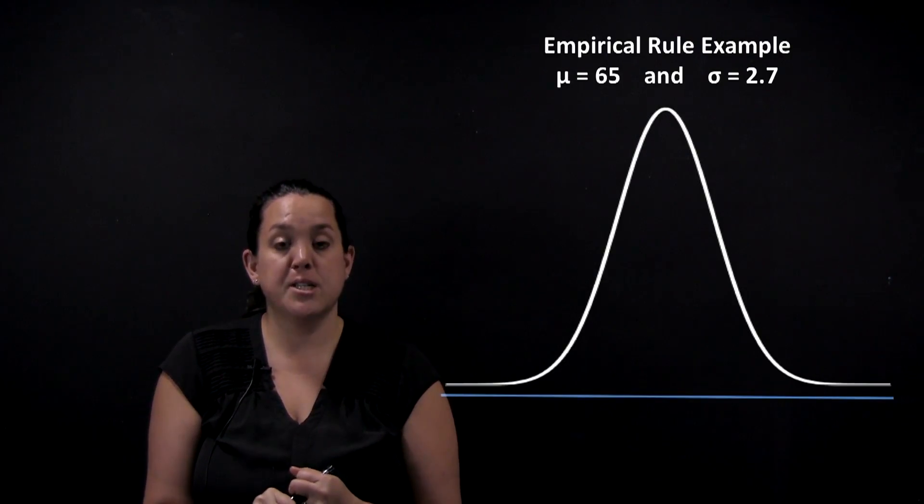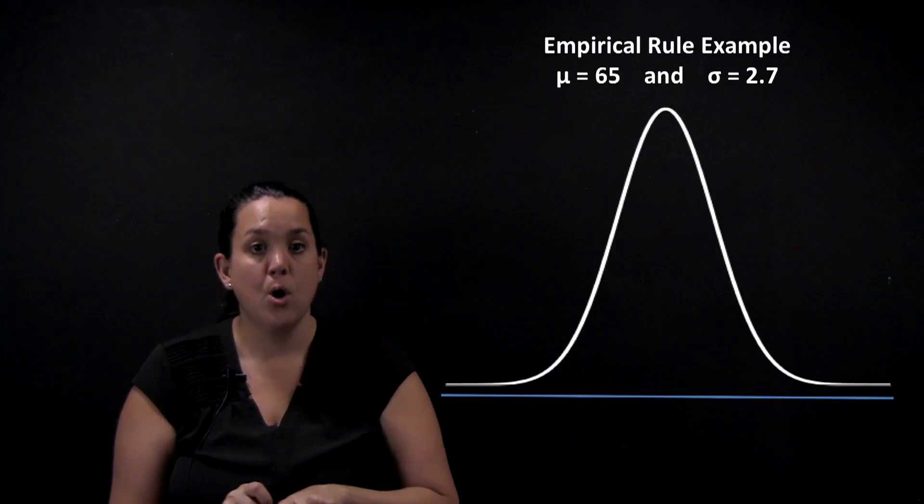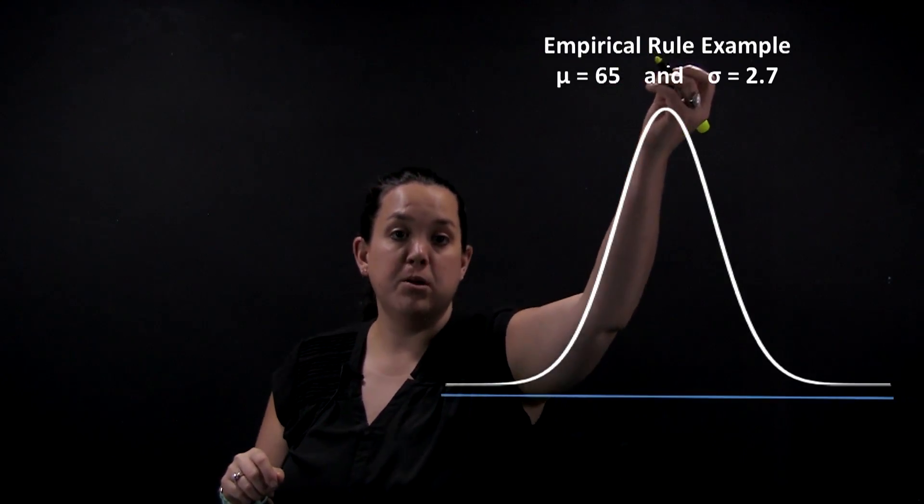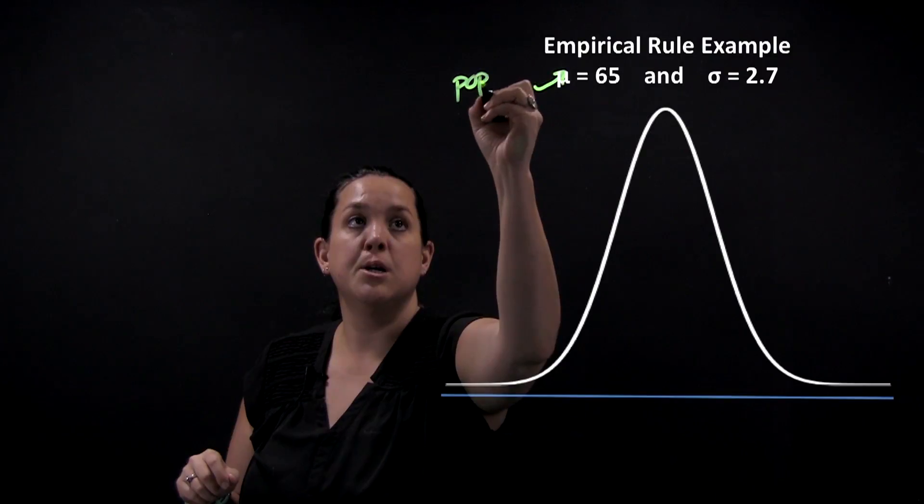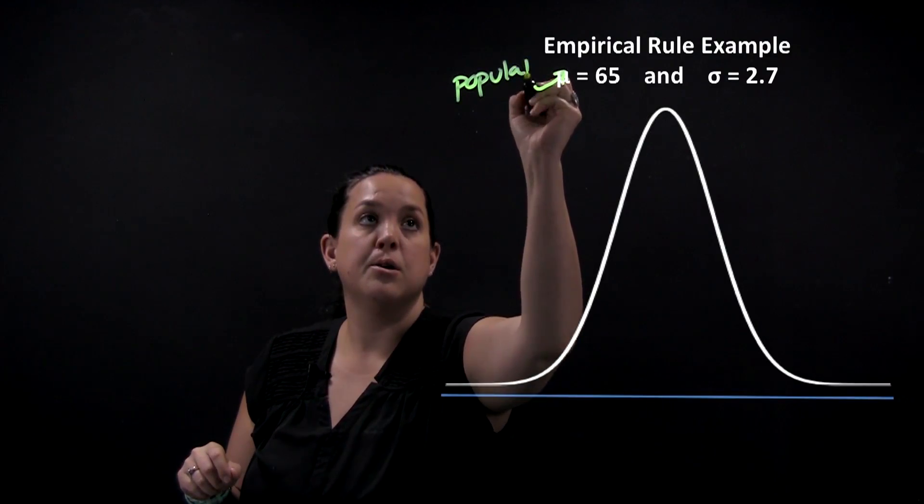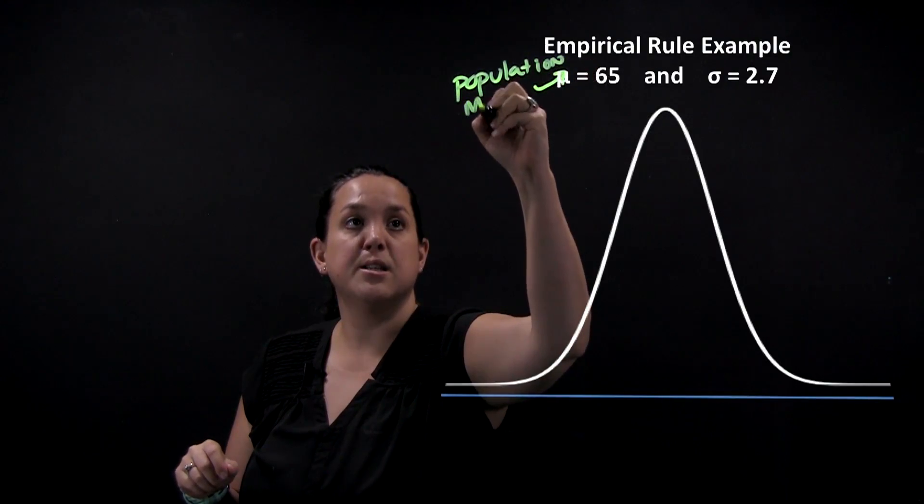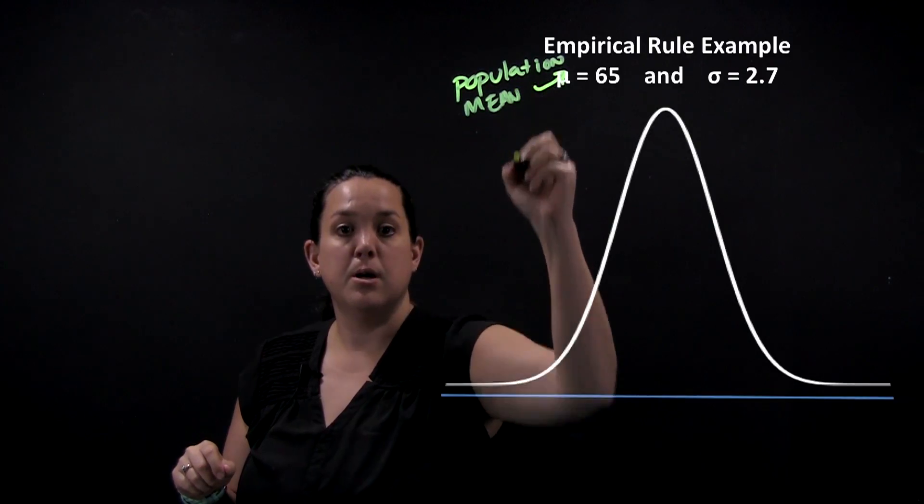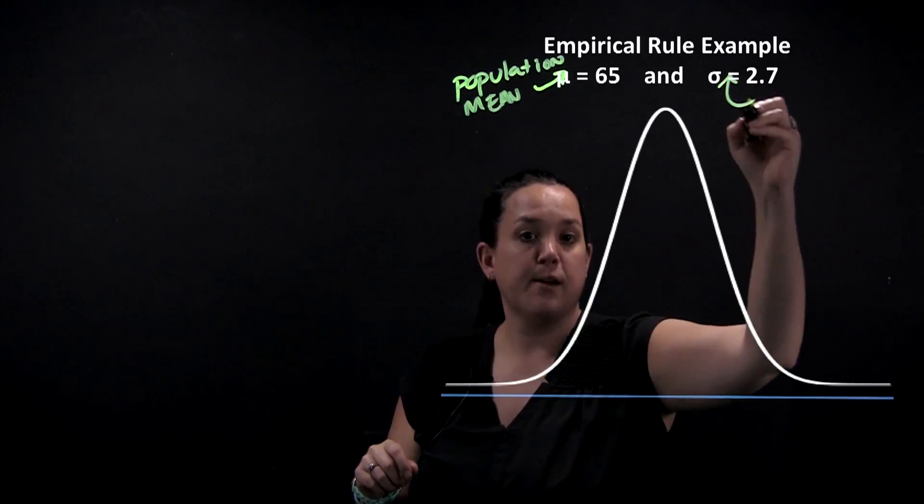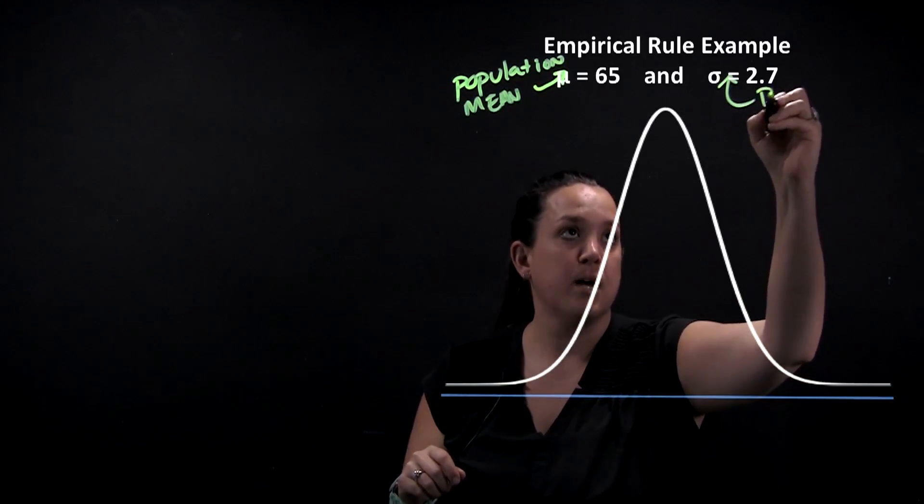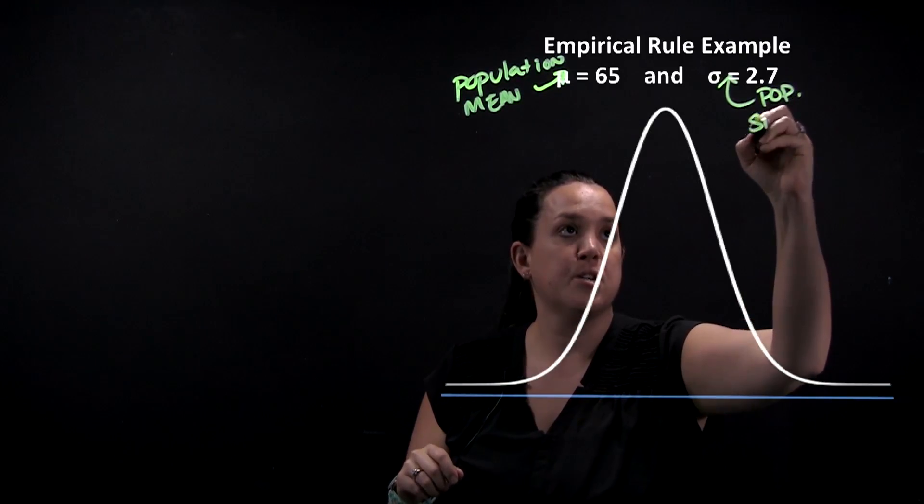So today we're looking at the average height of college females. We have a mean for the population, so remember mu is population mean, and that's going to be our center. And then sigma is 2.7, so remember that this is population standard deviation.